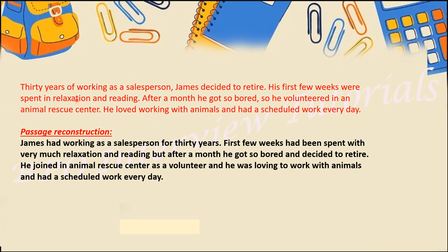The first important point: remember the names shown in the passage very sincerely, as this is a big mistake most people make. Here we have one character — James. Remember his profession: salesperson. He worked for 30 years, decided to retire, relaxed for one month, got bored, started volunteering at the animal rescue center, and scheduled his work every day.